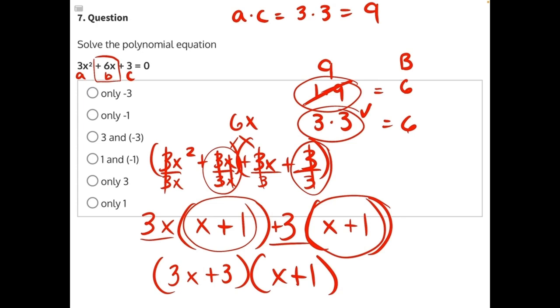But we're not done. We need to solve the polynomial, so we need to figure out what is the value of x for both of these binomials. So let's start with 3x plus 3 and set that equal to 0.